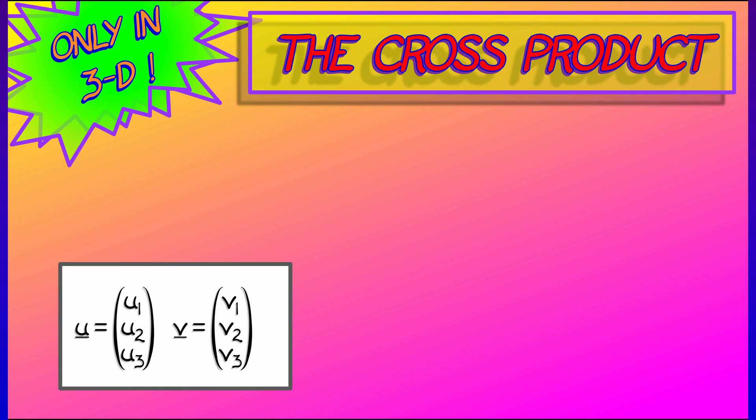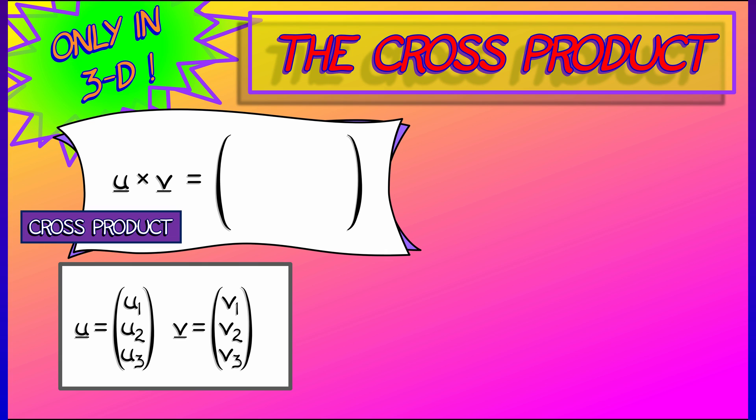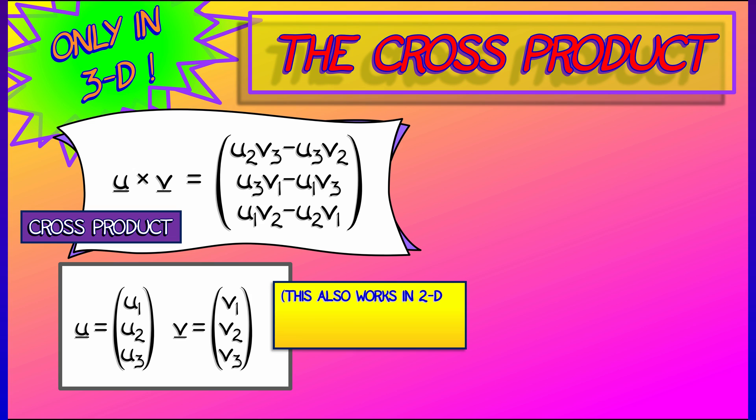So let's say we have a pair of vectors, u and v, u1, u2, u3, and v1, v2, v3. Then their cross-product, u cross v, is a new vector with components u2v3 minus u3v2, u3v1 minus u1v3, and u1v2 minus u2v1.